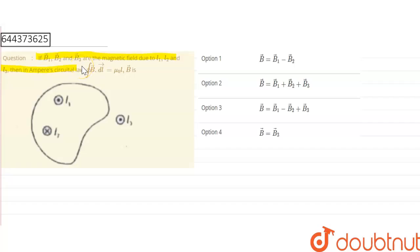If B1 vector, B2 vector, and B3 vector are the magnetic fields due to the currents i1, i2, and i3, then in Ampere's circuital law, closed line integral B vector dot dl vector is equal to mu0 i. So now how to find out the correct option?